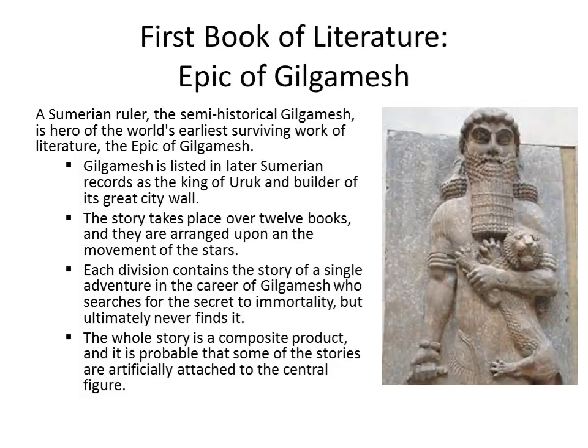The whole story is a composite product — some stories are probably artificially attached to the central figure. It's like what we learned about George Washington: we learned stories about what a great man he was, but not all were true. It was really a way to demonstrate the fierceness, bravery, and strength of the figure — in Washington's case, and similarly for Gilgamesh.